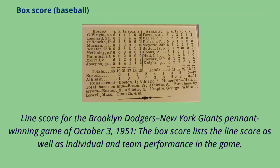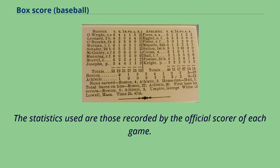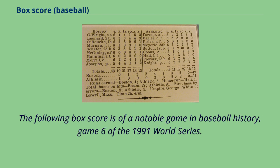Line score for the Brooklyn Dodgers-New York Giants pennant-winning game of October 3, 1951. The box score lists the line score as well as individual and team performance in the game. The statistics used are those recorded by the official scorer of each game. The following box score is of a notable game in baseball history, Game 6 of the 1991 World Series.